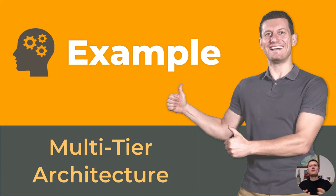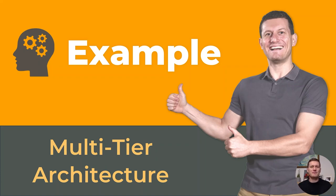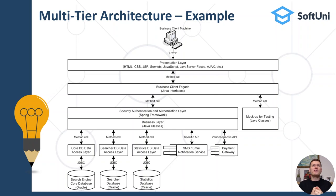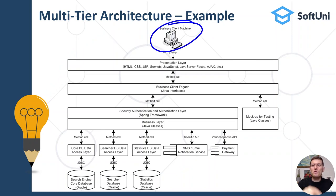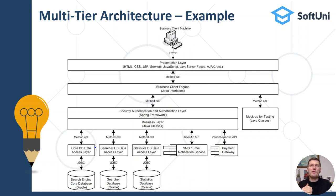Now that you are familiar with some of the most popular software architectures, let's see them in action. I'll give you an example of a multi-tier enterprise architecture to see how these three-tier and multi-tier components communicate with each other. This is an example of a multi-tier software architecture diagram that explains how a relatively complex multi-tier system works — how the client app interacts with the server side, the structure of the server-side components, and their interaction with the database and external APIs. This is just an example from an old Java-based system and the details here are not important.